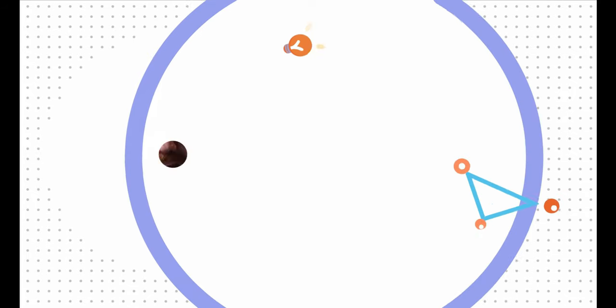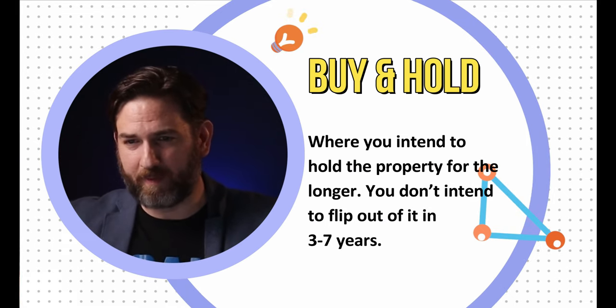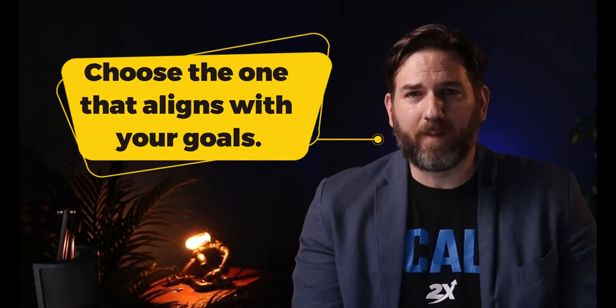The third strategy is buy and hold. This is where you intend to hold the property for the long term — you're not going in thinking you'll flip it. You're buying for long-term cashflow and building wealth through equity in the property over time. You may sell it 20 years down the road, but that's not your intention when you buy. Each strategy has its pros, cons, and risks — choose the one that aligns with your current goals. A very common trajectory is to start wholesaling, then move to value-add flips, and eventually transition into buy and hold.